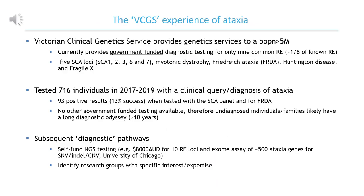The experience at Murdoch Children's is typical. The Victorian Clinical Genetic Services provides genetic testing to a population of over 5 million people. Approximately 250 individuals with clinical query of ataxia are tested each year, with a diagnostic rate of just under 10%. Unfortunately, the National Health Service will only fund testing of the nine most common repeat expansions, meaning undiagnosed individuals generally face a long diagnostic odyssey. Options available to these undiagnosed patients include trying to be enrolled in a research project, or self-funding additional diagnostic testing, which is often performed overseas and can be very expensive, but still fail to provide a diagnosis.